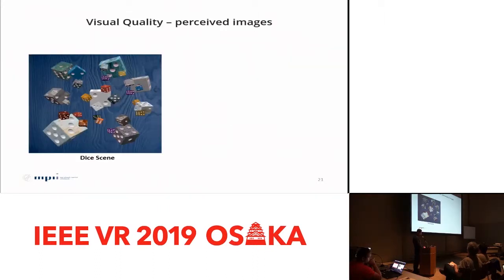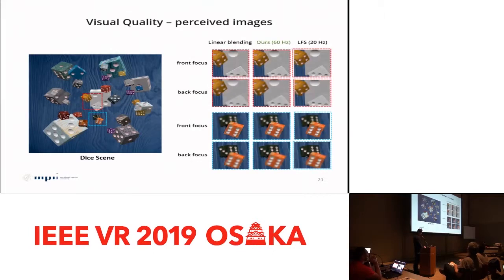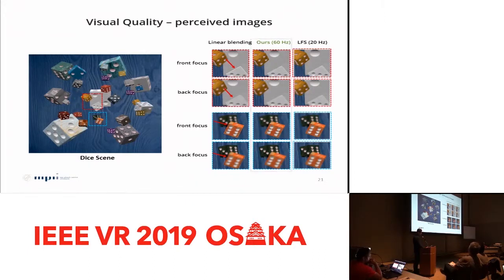We first evaluate our method in terms of visual quality. One test scene has various depth discontinuities with different contrast at the edges. Linear blending produces artifacts around discontinuities. Light field synthesis, shown in the right column, reconstructs edges without any problem but is slow. Our hybrid method, shown in the middle column, can also reproduce edges correctly and achieves real-time performance.